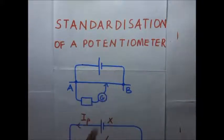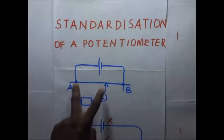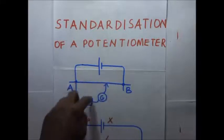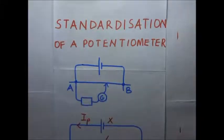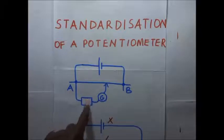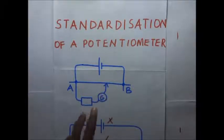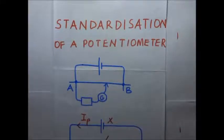When the balance point along AB is obtained, the potential difference across point A and the balance point is equal to the potential difference across the components in the secondary circuit. When a driver cell is connected to the slide wire AB, it applies a uniform potential difference across the wire. So when solving potentiometer problems, one key thing we need to find first is the PD per unit length of the wire.